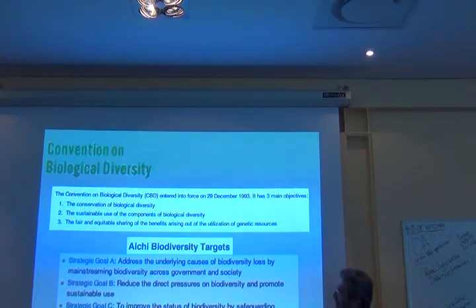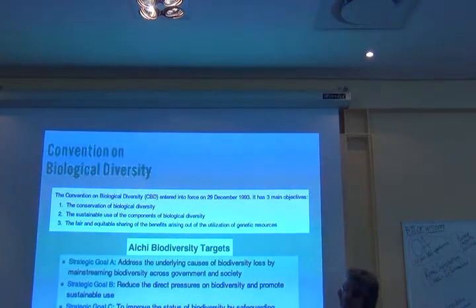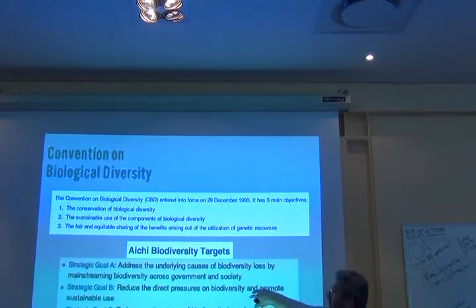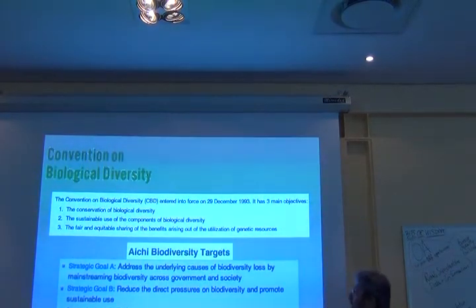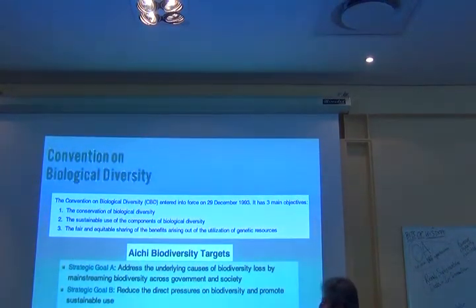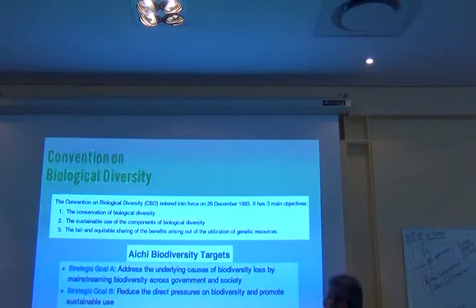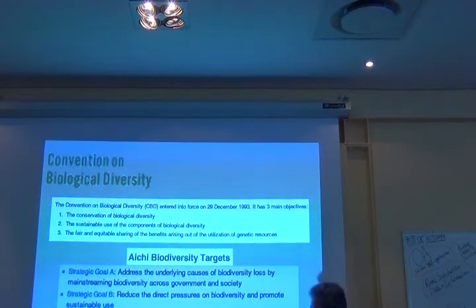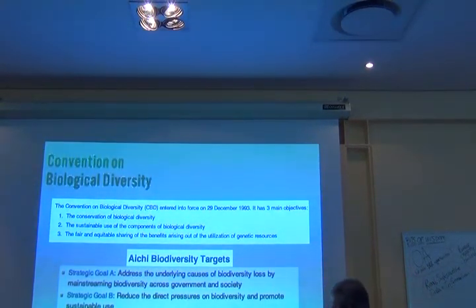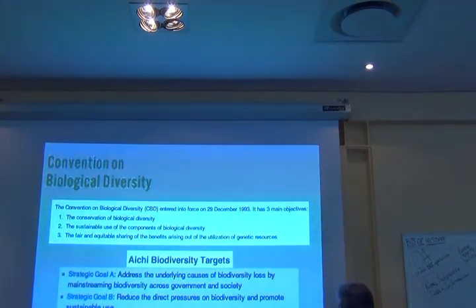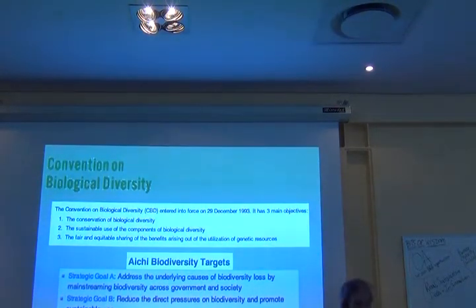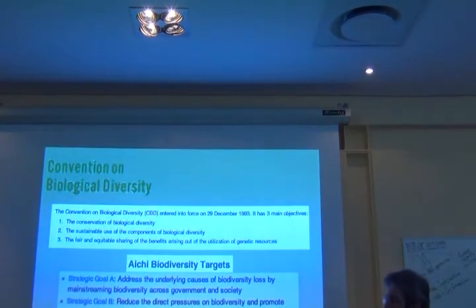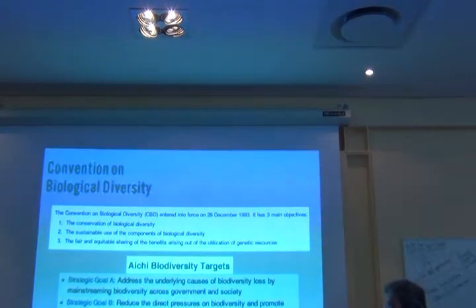The Aichi biodiversity targets address the underlying causes of biodiversity loss, reduce the direct pressures on biodiversity, improve the status of biodiversity, enhance the benefits to all, and enhance implementation through participatory planning, knowledge management, and capacity building. These are all things I can pretty much get into — noble goals.